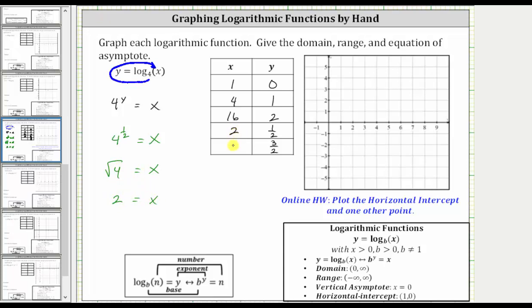But I do want to make a note that sometimes these values won't come out so nice. You may have to use a calculator and get a decimal approximation. And even though you won't have an exact value for x, the ordered pair will still help make an accurate graph.